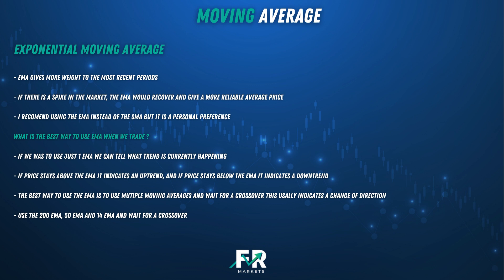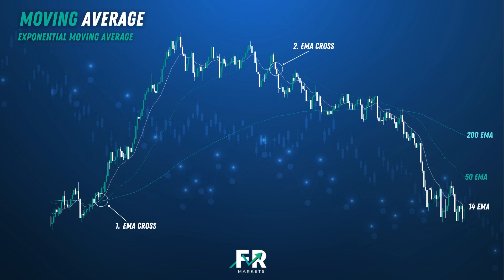The best way to use the EMA is to use multiple moving averages and wait for a crossover, which usually indicates a change of direction. I use the 200 EMA, the 50 EMA, and the 14 EMA, and then wait for a crossover in the market. As you can see on the screen, at the first EMA cross all three EMA lines crossed and then price made a big move upwards — we could have entered a buy trade there.